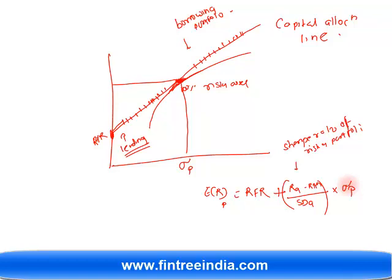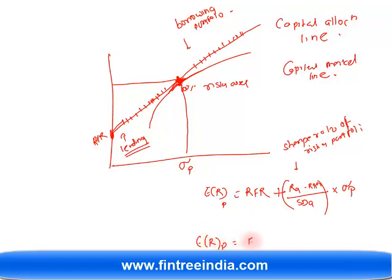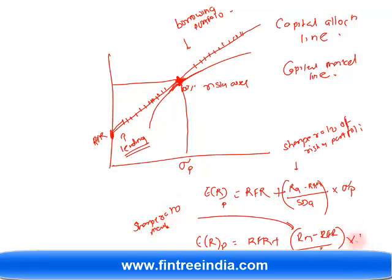Four types of questions arise from the CAL: given risk find return, given return find risk, given return find portfolio weights, given risk find portfolio weights. Then, changing one assumption — the risky portfolio is now the market portfolio — the same line becomes the capital market line (CML). The CML equation is: E(Rₚ) = RFR + [(Rₘ − RFR) / σₘ] × σₚ, where the slope is the Sharpe ratio of the market.